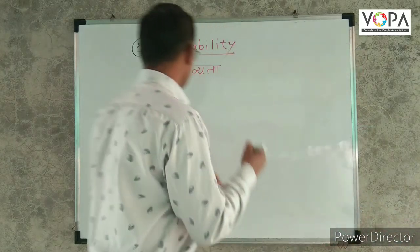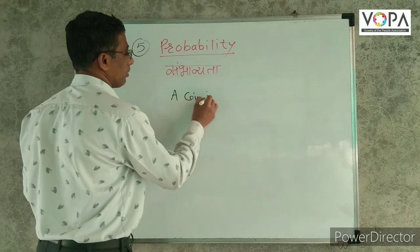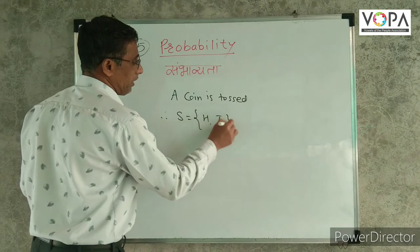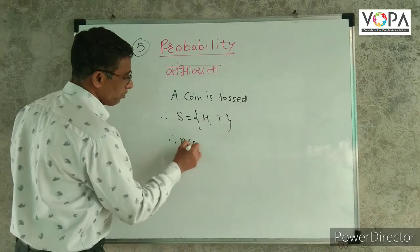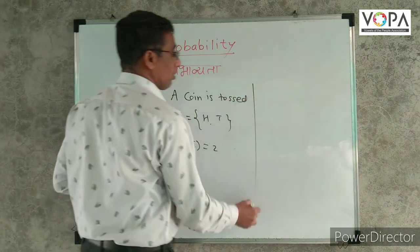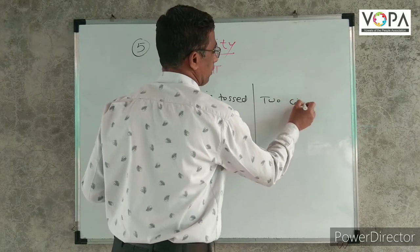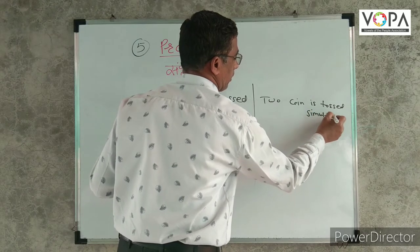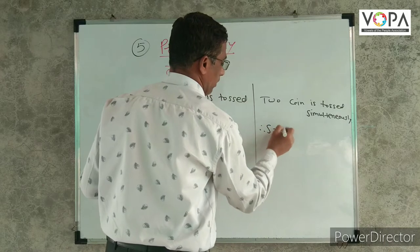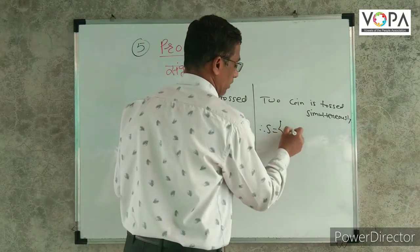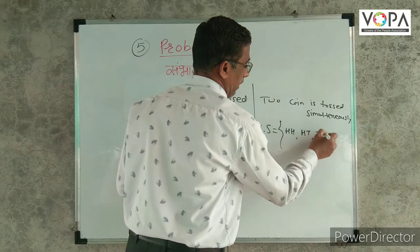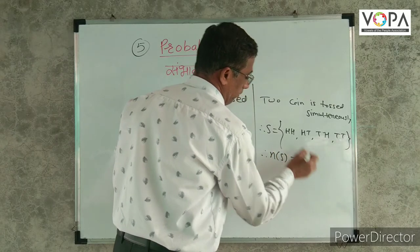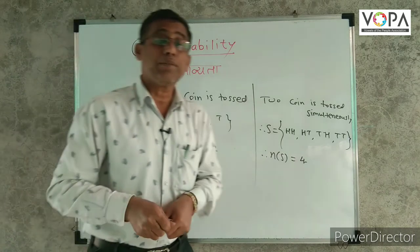Suppose a coin is tossed, therefore sample space is {H, T}, so n of S is 2. Suppose two coins are tossed simultaneously, then what we get is both heads, HT, TH, TT — therefore the number of sample points is four, so there will be four possibilities.